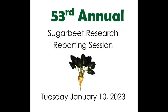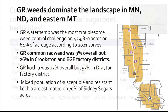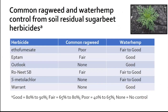We have glyphosate-resistant kochia estimated to affect 70% of the Sydney sugar beet acres. Here we have six chemistries used for soil residual sugar beet herbicides. We can see that there is fair to good control of waterhemp, but poor to fair control of common ragweed.